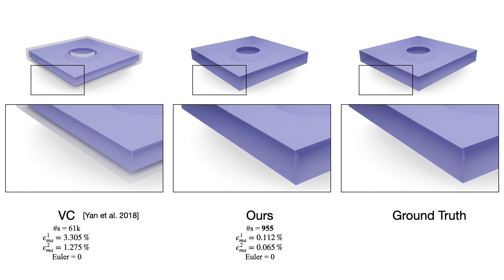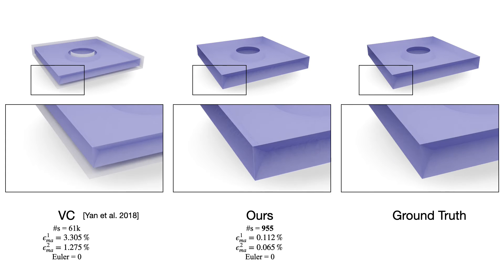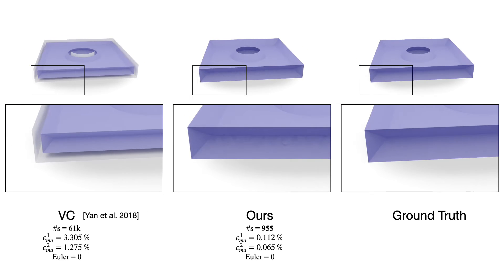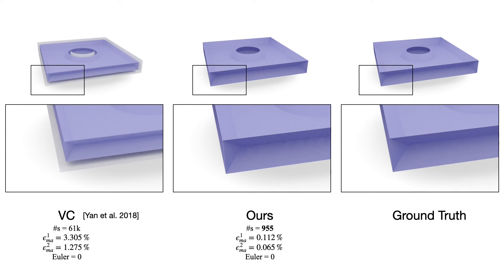The medial mesh generated from VC shrinks. It also produces zigzag structure around the external feature curves for models whose boundary curves are not parallel to the voxel boundaries. Please refer to the paper for more comparisons analysis with VC.